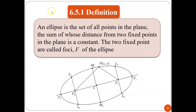So what is an ellipse? An ellipse is the set of all points in the plane, the sum of whose distances from two fixed points in the plane is a constant. The two fixed points are called foci, known as capital F, of the ellipse.